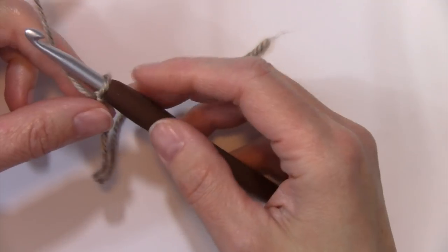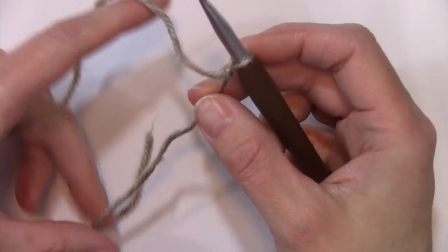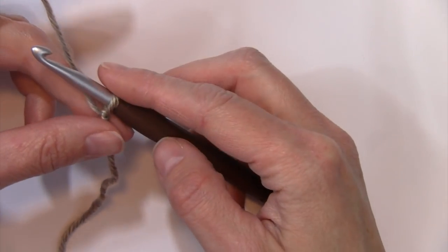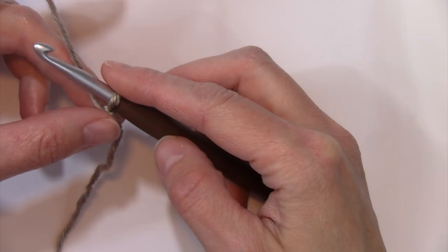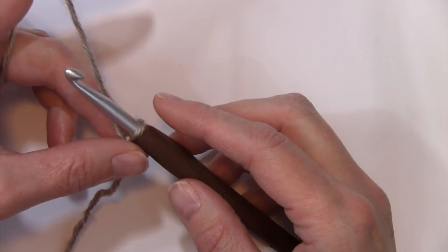Basically you're going to be doing one row of double crochets, and then the second row is what gives you that great texture that pops out. It's just a combination of single crochets and double crochets, so very easy.